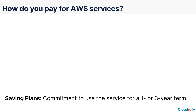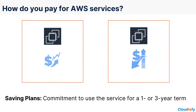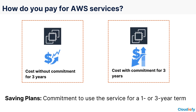Next, AWS has the savings plans pricing model, which provides flexibility and savings of up to 72% compared to on-demand rates by committing to use a specific amount over a one-year or three-year term.